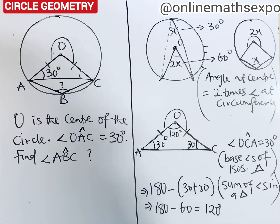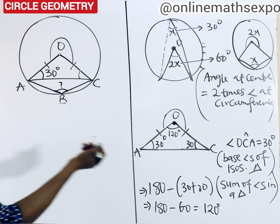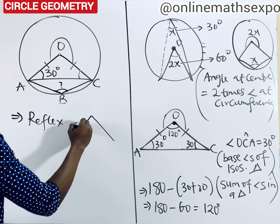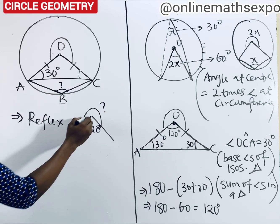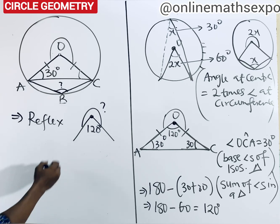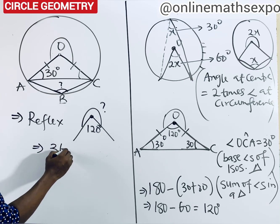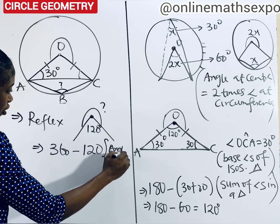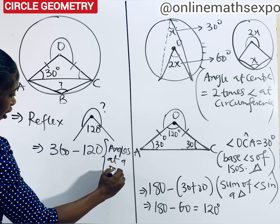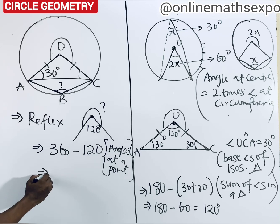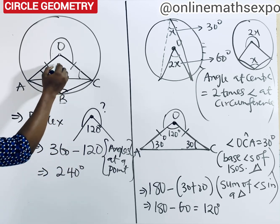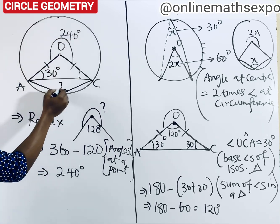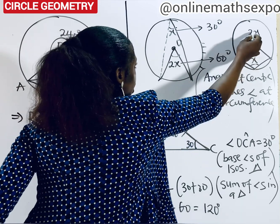So angle AOC is 120 degrees. Now we can find the reflex angle. Since this forms angles at a point, and a full revolution is 360 degrees, we do 360 minus 120. Our reason: angles at a point. When you subtract, it gives us 240 degrees. So the reflex angle at this point is 240 degrees.